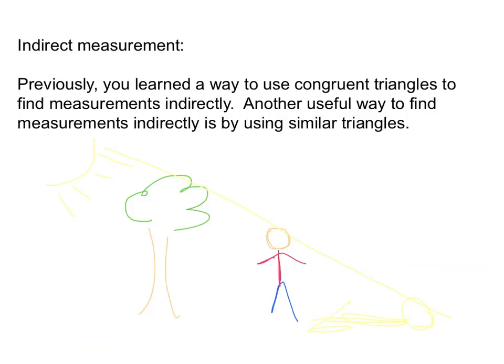Indirect measurement. So I think this is a lot of meat of geometry. It's very applicable to real life on a daily basis. So what is indirect measurement? Previously you learned a way to use congruent triangles to find measurements indirectly. Another useful way to find measurements indirectly is by using similar triangles. You'll see these a lot on standardized tests where it talks about a person and we have a shadow of the person and a shadow of the tree. And it's just using indirect measurement to find. Like, it's really hard to measure the height of this tree. I can measure the height of me and the height of the shadows. But to measure the tree, I can use indirect measurement to do that. And let's figure out how.